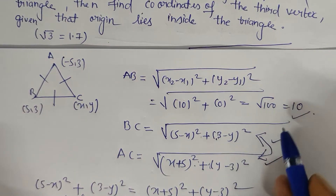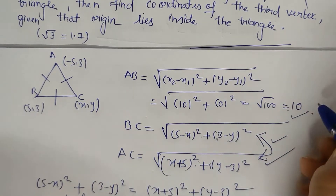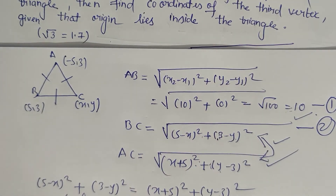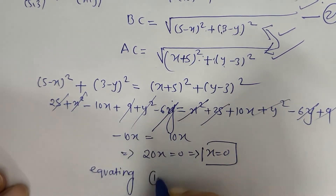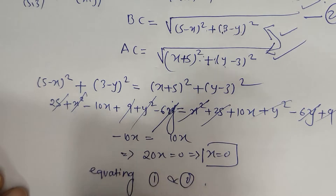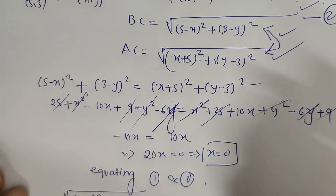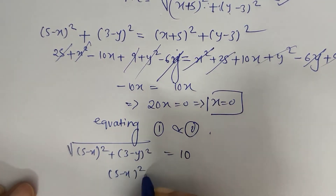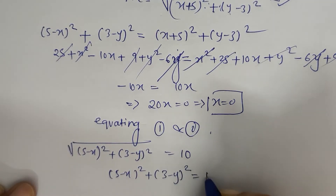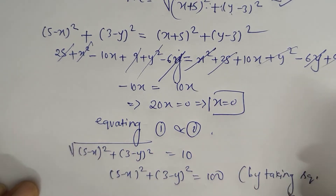Now, comparing any of the side distances with the first distance (which is 10), we can solve for y. Equating equation 1 and equation 2 gives us: square root of 5 minus x whole square plus 3 minus y whole square equals 10. Squaring both sides: 5 minus x whole square plus 3 minus y whole square equals 100.